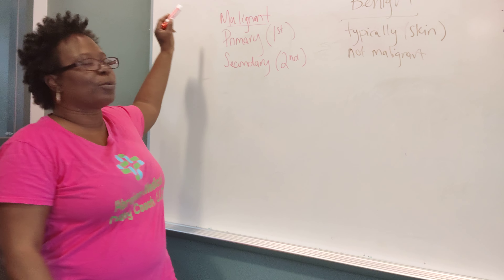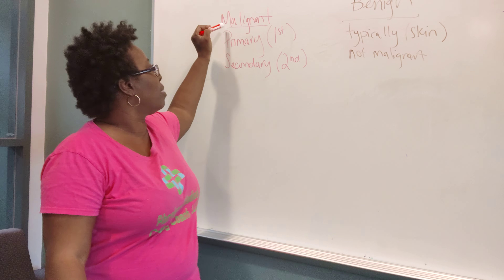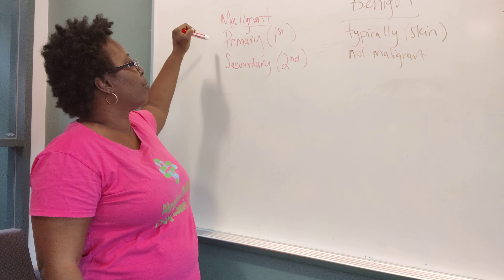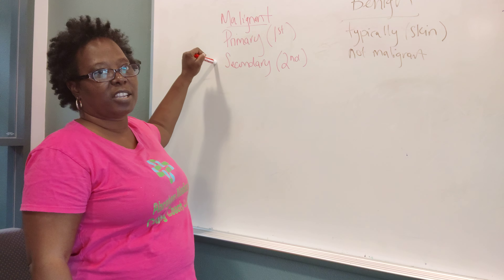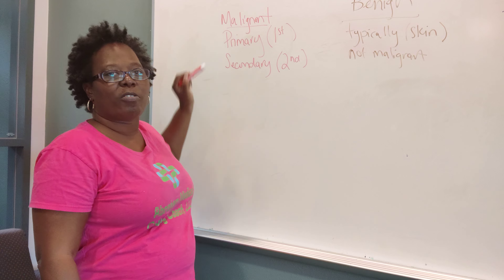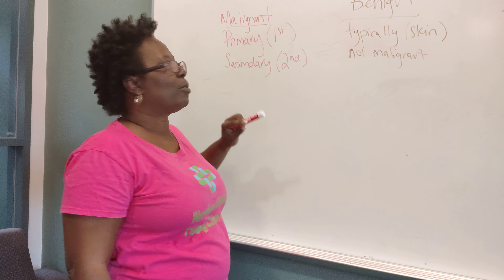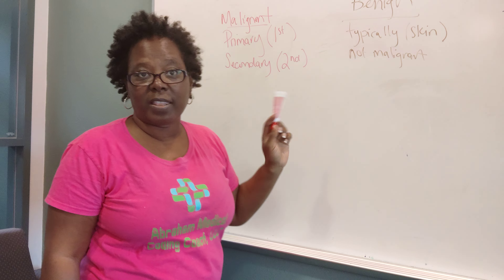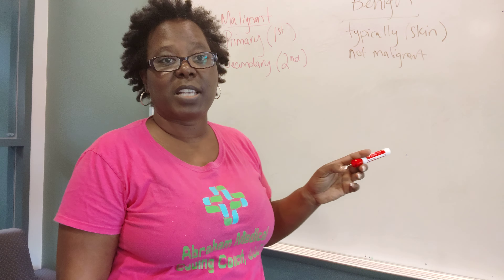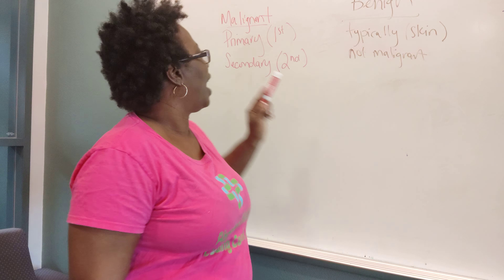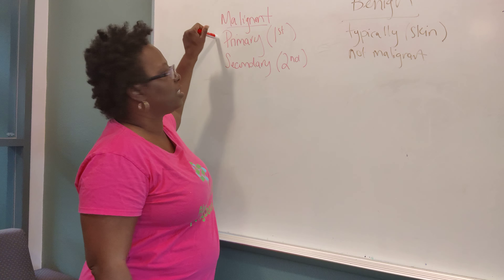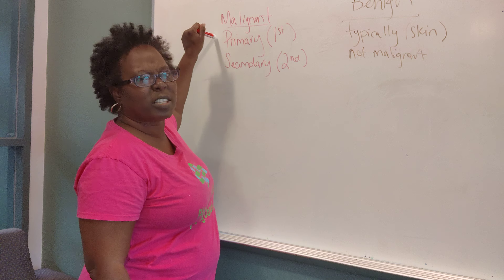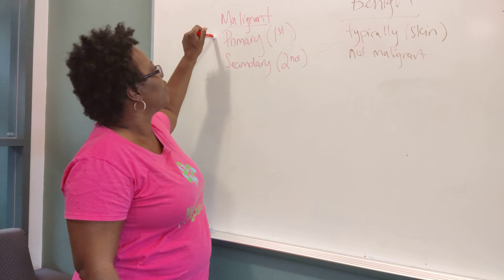First we're going to get started with the malignant. Right under malignant you see I have primary and secondary. On the neoplasm table, the primary and the secondary also has a column. However, I placed it under the malignant table because we want to really talk about that.